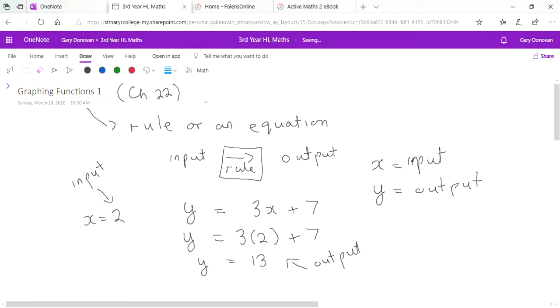We just picked one input value there, but we could pick another. Let x equals 3, and we get y equals 16 when x equals 3. You could do this for an infinite amount of values. Basically, no matter what your input is, you get a different output.